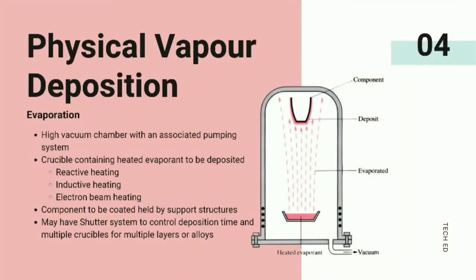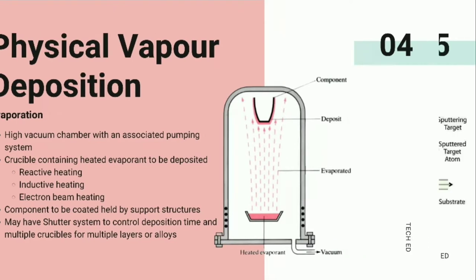Evaporation PVD system consists of a high vacuum chamber with a crucible containing an evaporant to be deposited, that is heated by resistive, inductive, or electron beam heating techniques. The component to be coated is supported within the chamber. The system may also have shutter systems to control deposition.